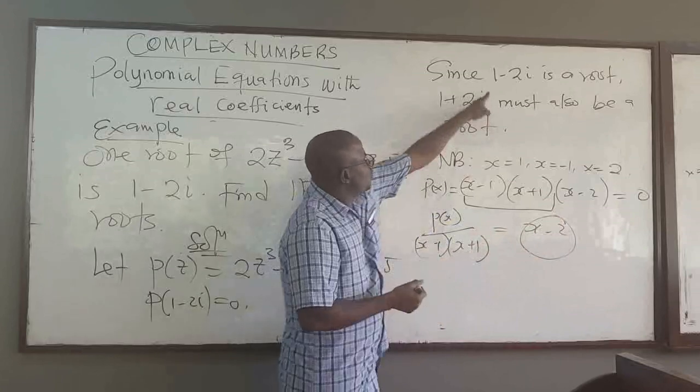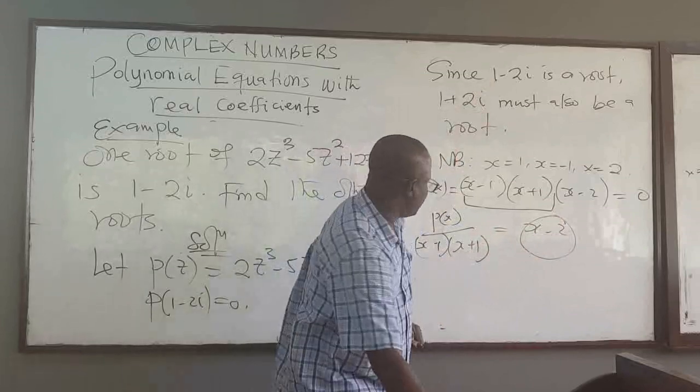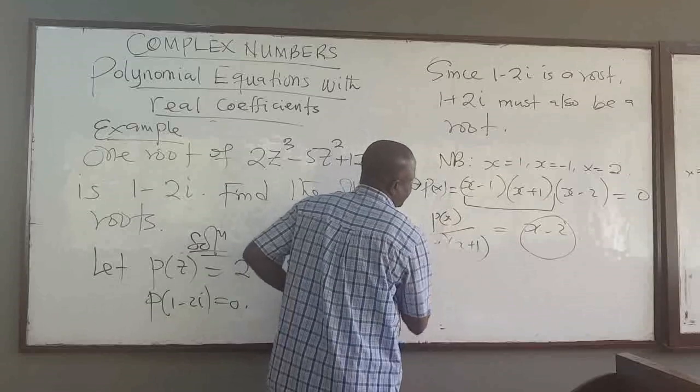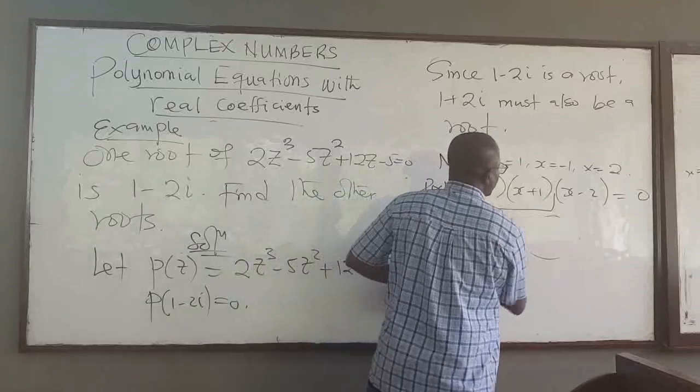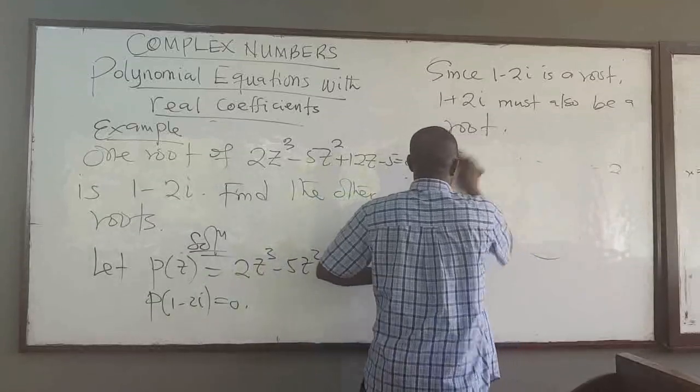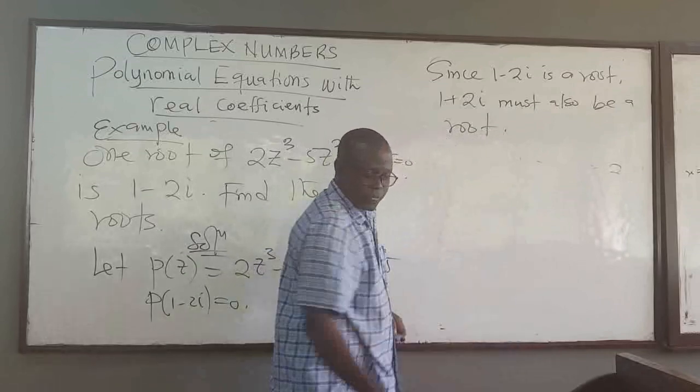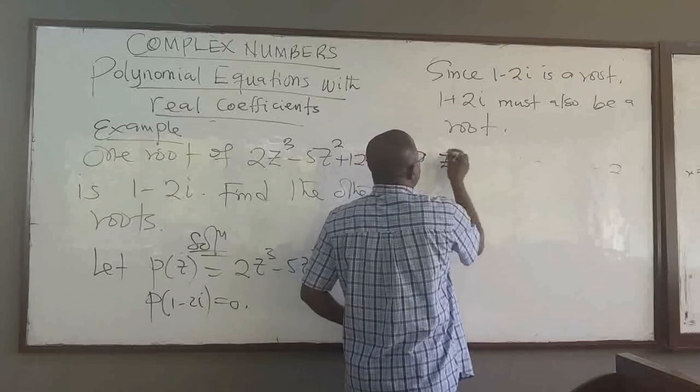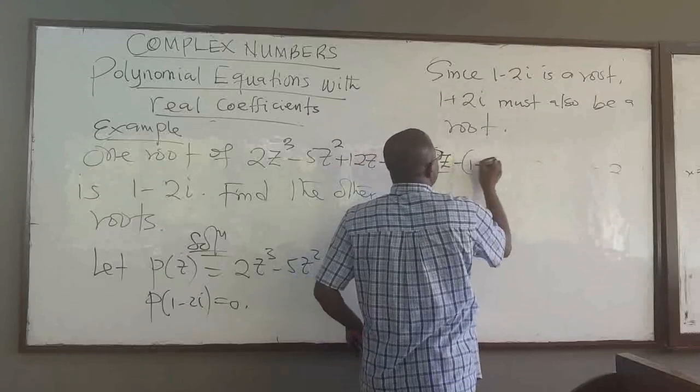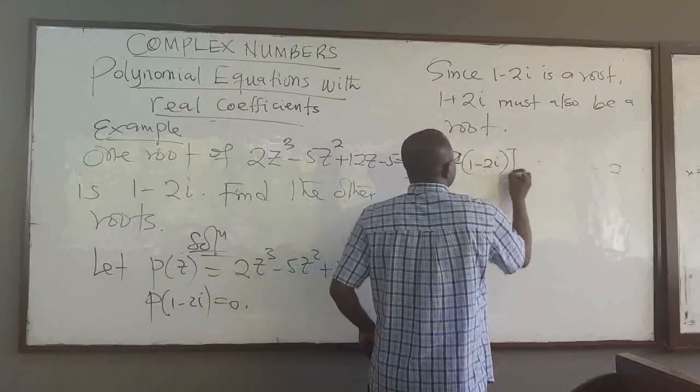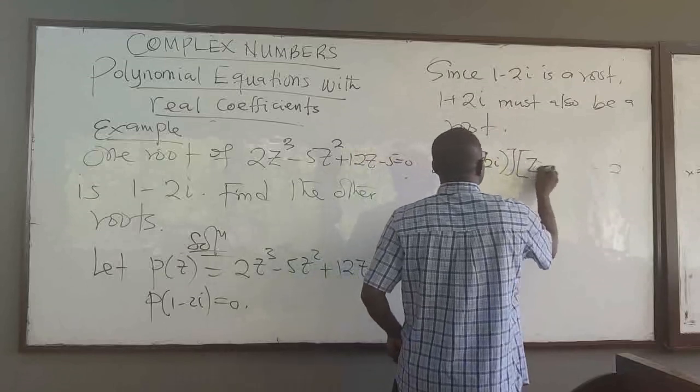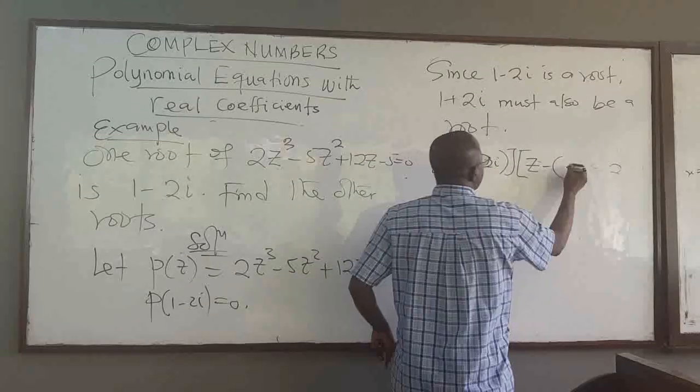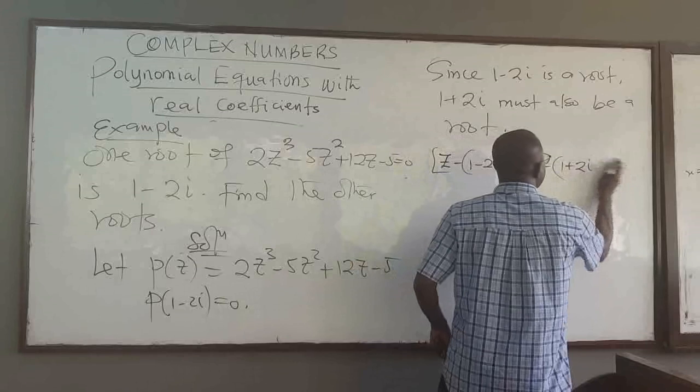So, we know two of the roots, which means that since we know two of the roots, we can basically go through that process. It means I can take z minus 1 minus 2i, I can multiply these two out, take z minus 1 plus 2i.